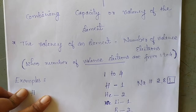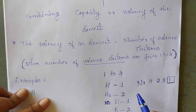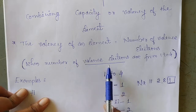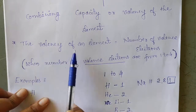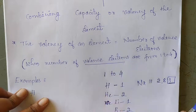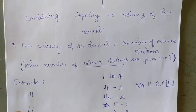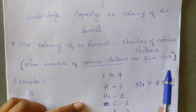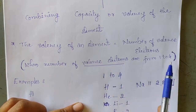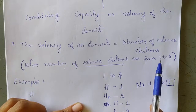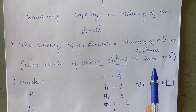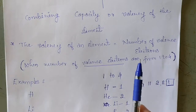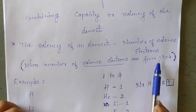In case of elements when the number of valence electrons are from 1 to 4, valency of an element is equal to the number of valence electrons. Suppose you have an element whose number of valence electrons lies between 1 to 4.